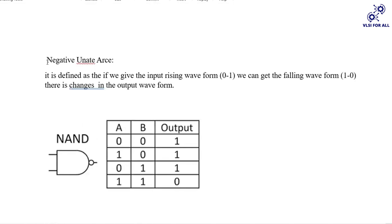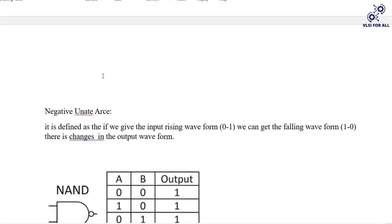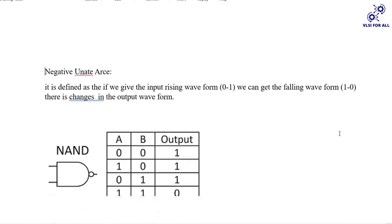Negative unate arc is the opposite of the positive unate arc. It is defined as: if we give the input rising from 0 to 1, we get the output falling from 1 to 0. So if we give a 0-to-1 input signal, we will get the output signal going 1 to 0 — there is a change in the output waveform.